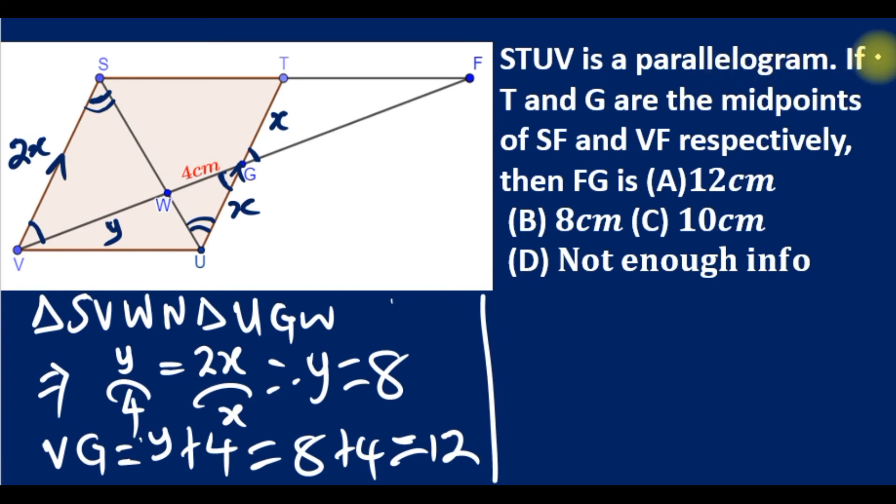Remember they told us that G is the midpoint of FV. Therefore FG must be equal to VG, which is 12. The answer is option A.